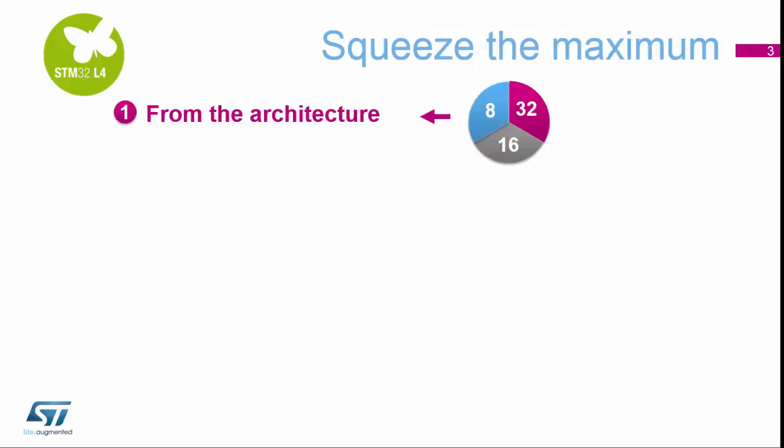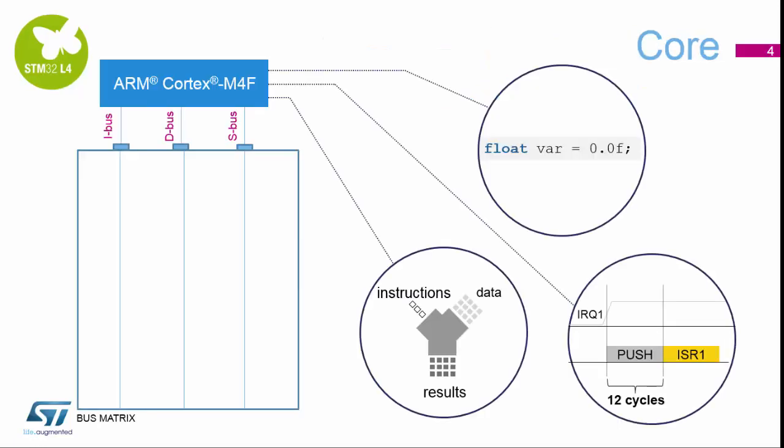So how are we going to actually get current consumption down in our application? We're going to have a look at what we can do within the architecture side of the STM32L4. ARM have provided us with a Cortex M4F core, which gives us floating point variables, multiple bus structures, and 12 cycle interrupt instructions. We're going to use some of these features, primarily the interrupts, to wake the system up from various low power modes.